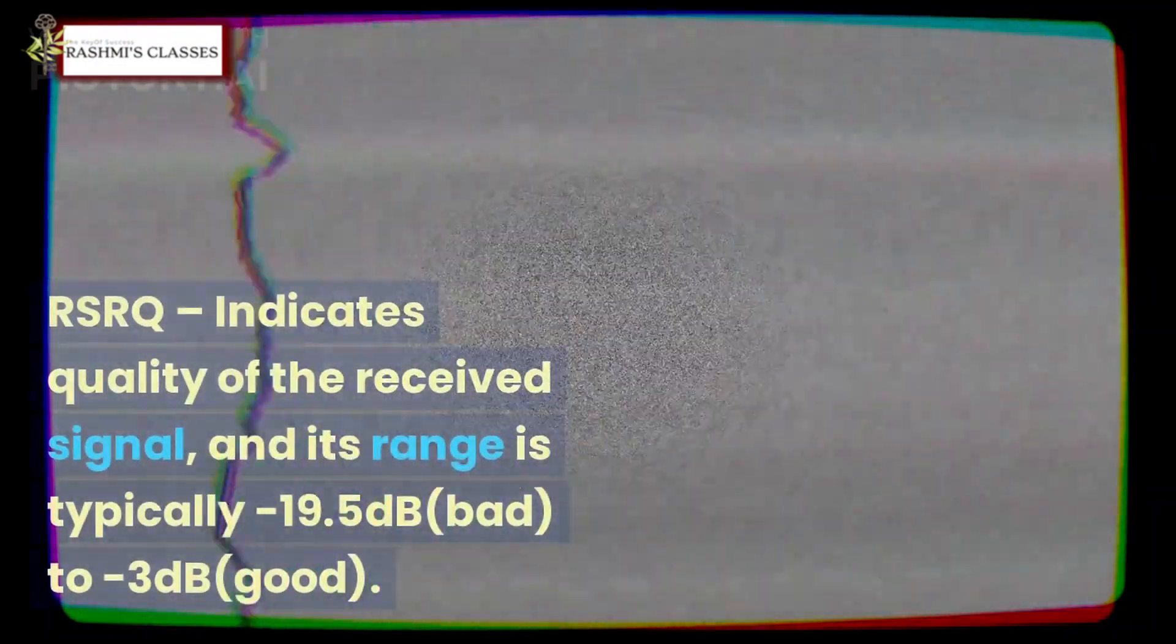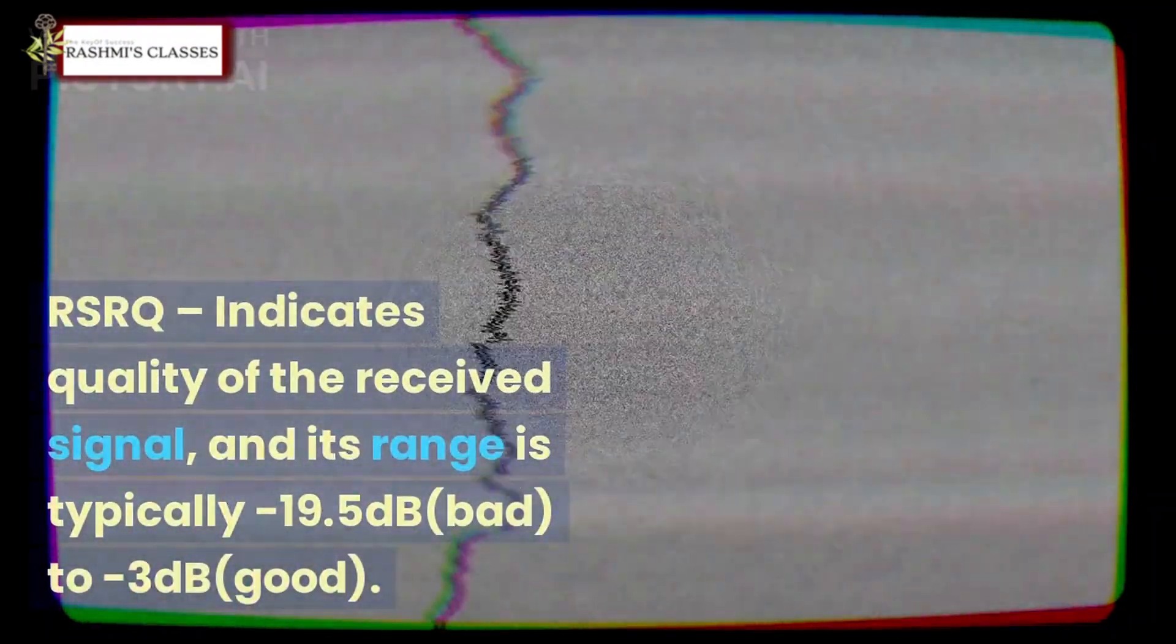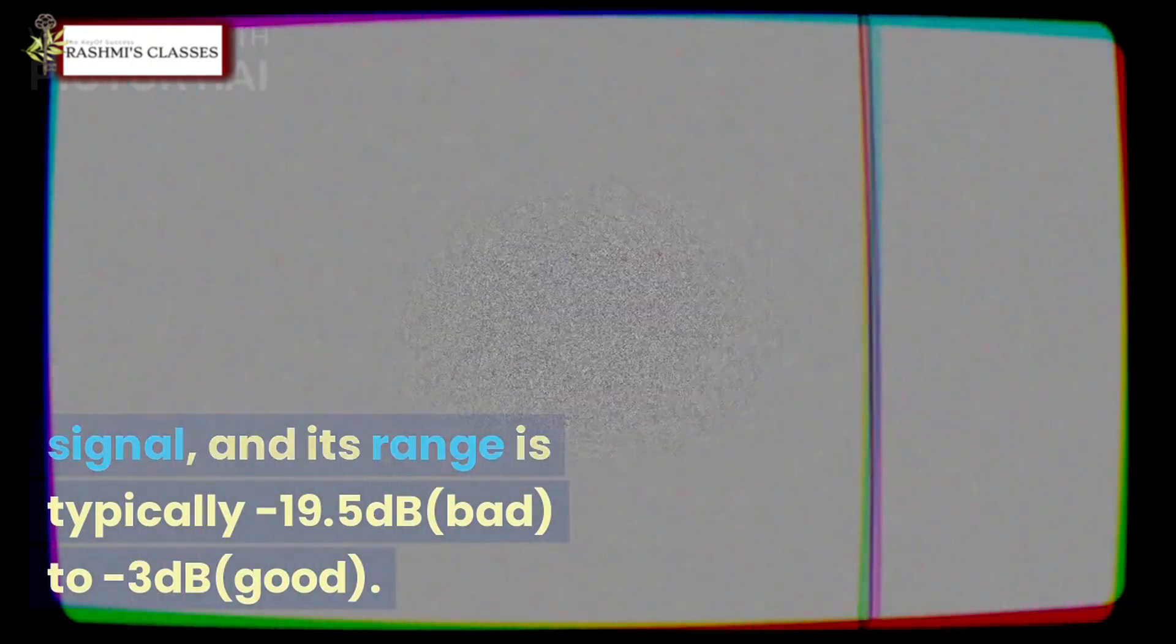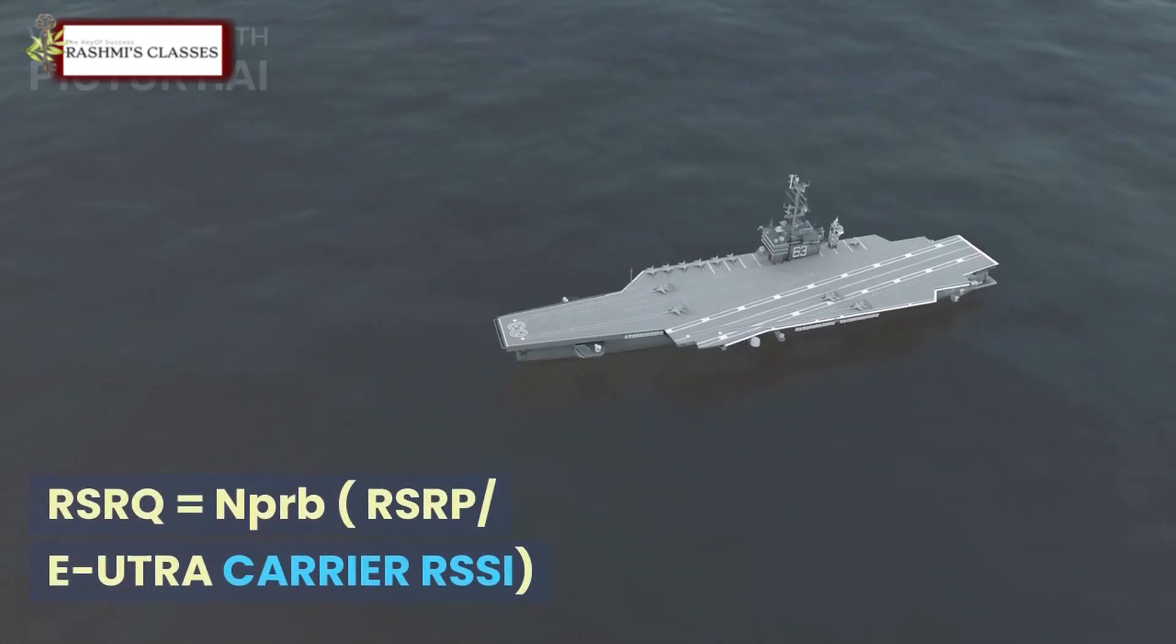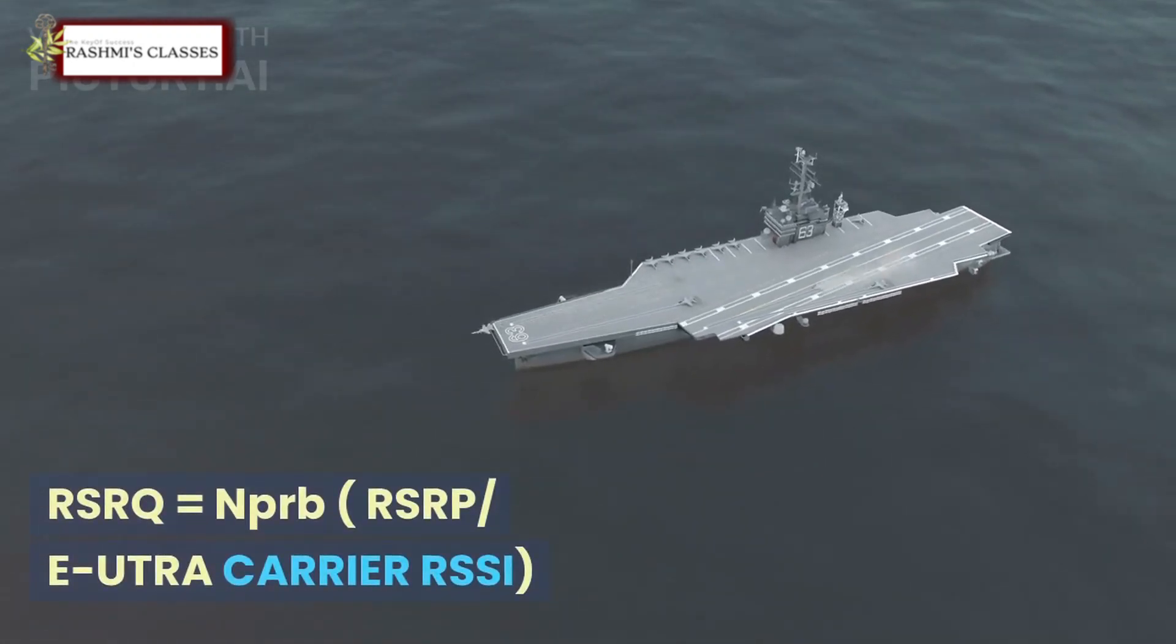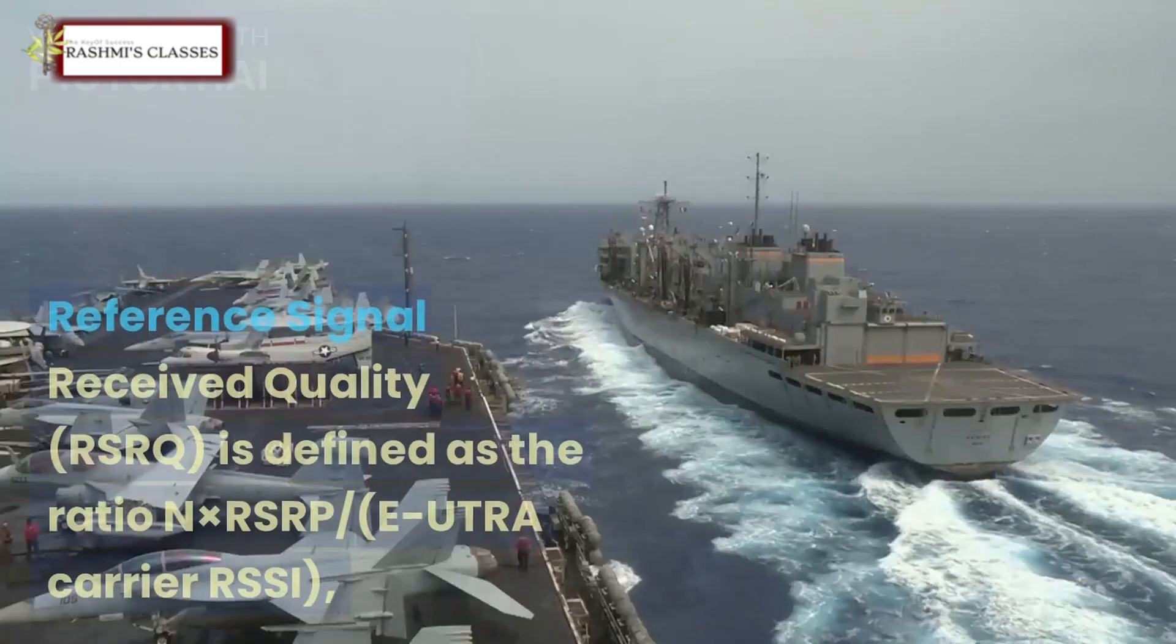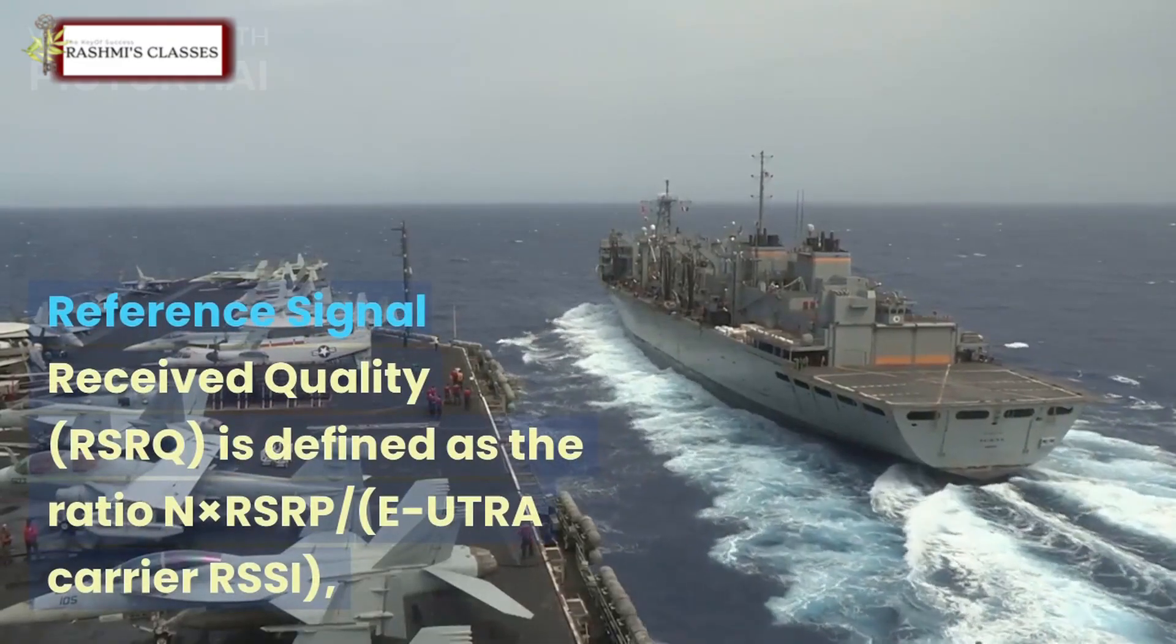2. RSRQ: RSRQ indicates quality of the received signal and its range is typically -19.5 dB (bad) to -3 dB (good). RSRQ = N*RSRP / E-UTRA carrier RSSI. Reference Signal Received Quality (RSRQ) is defined as the ratio N*RSRP / E-UTRA carrier RSSI.